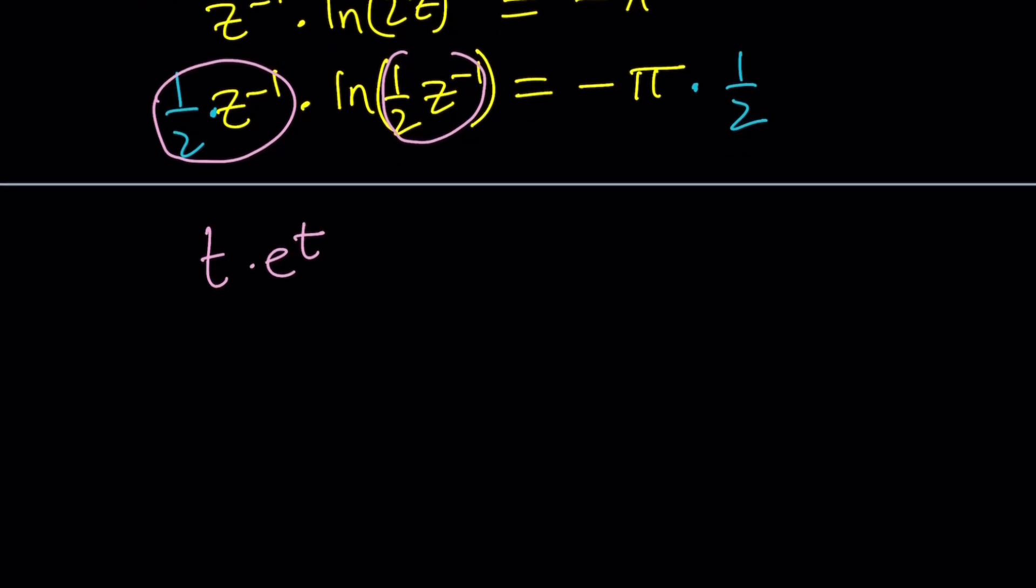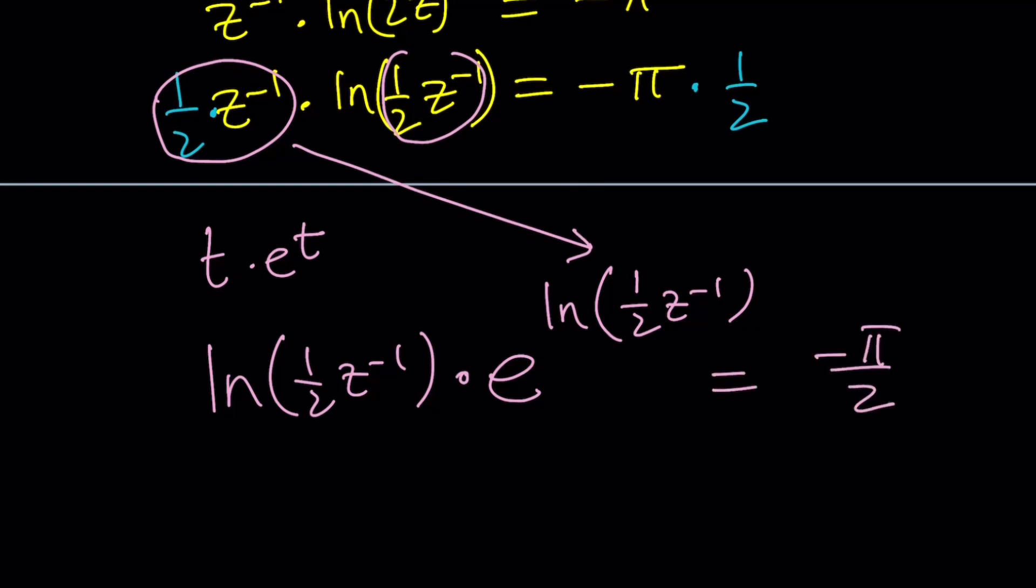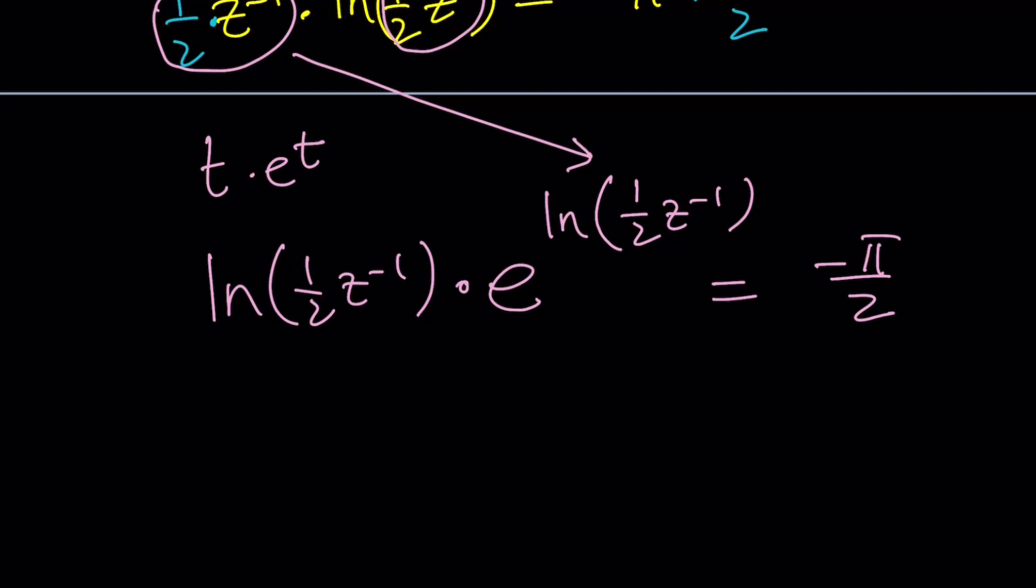Well, that identity is basically writing 1/2 z to the power of negative 1 as follows. Can I write 1/2 z to the power of negative 1 as e to the power ln(1/2 z to the power of negative 1)? And the answer is yes, right? Because e to the power ln(x) is x. Remember? That's the same thing. So now this is equal to negative π over 2. That's good. Don't worry. We're going to work on that later.